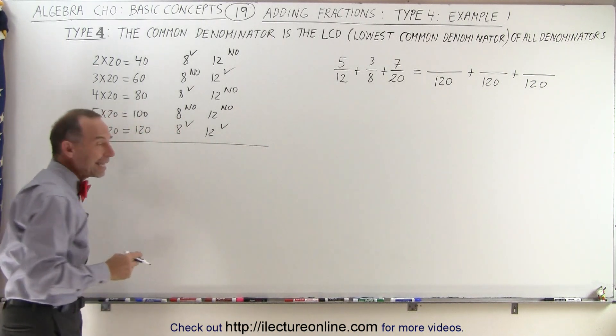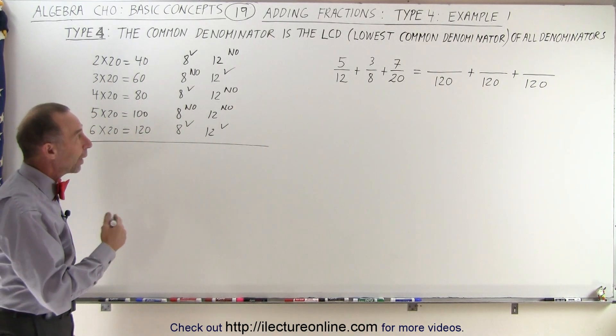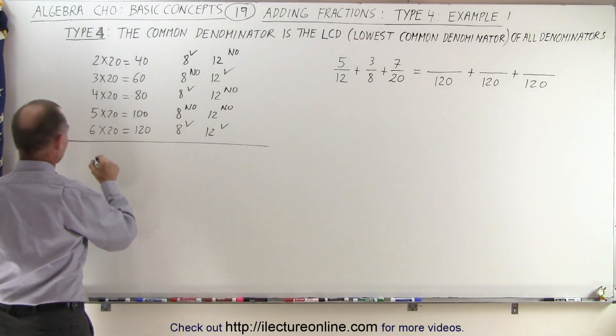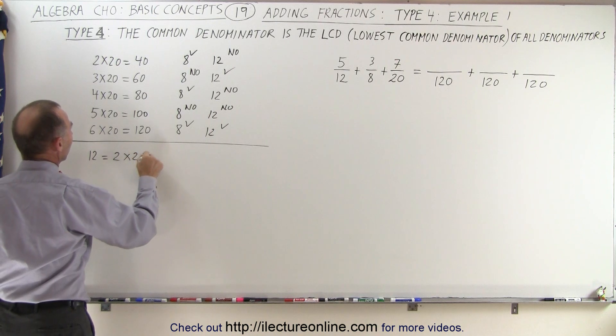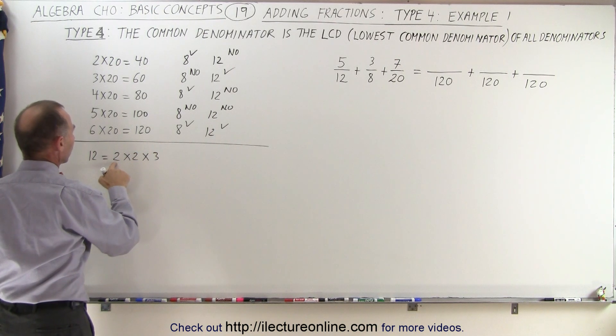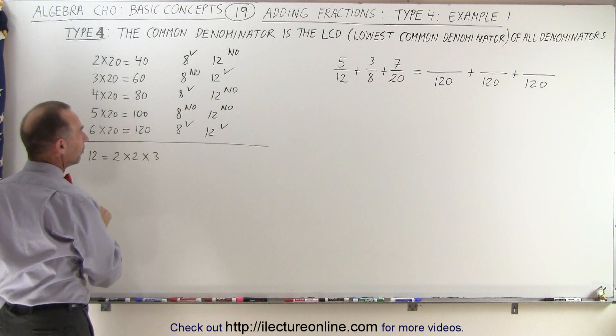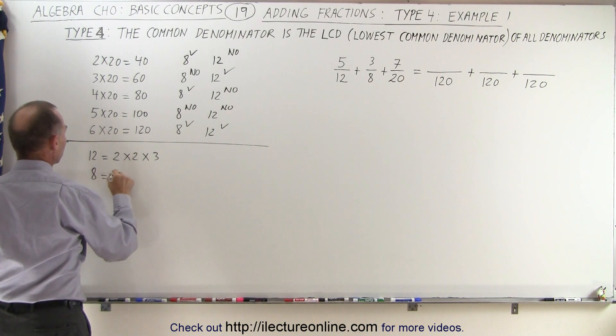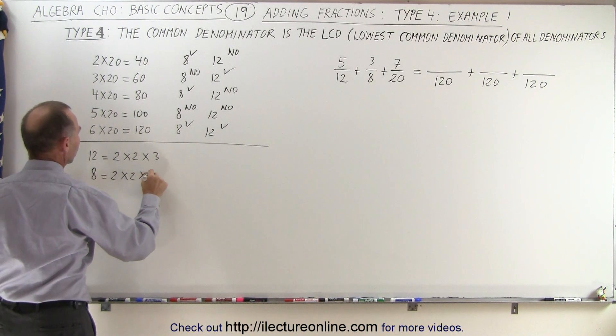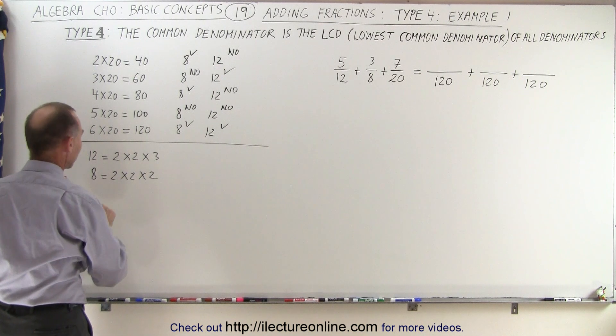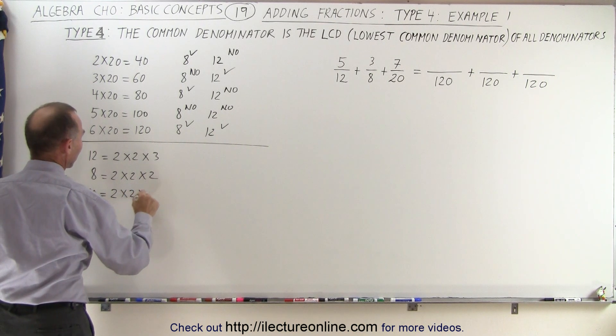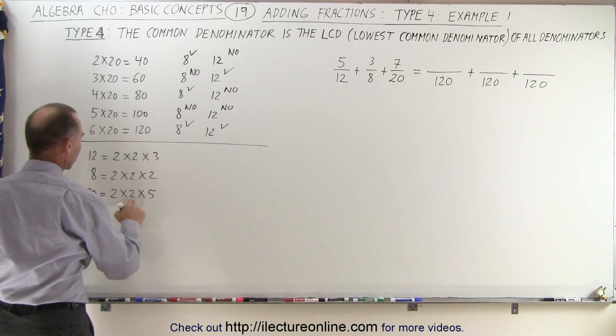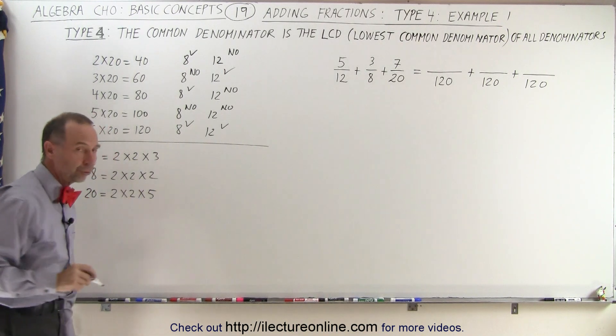Our second method was to take each of the three denominators and write it as a product of its factors. So 12 can be written as 2 times 2 times 3. So we have 2 occurs twice, 3 occurs once. 8 is equal to 2 times 2 times 2. So 2 occurs 3 times. And 20 is equal to 2 times 2 times 5. And so 2 occurs twice and 5 occurs once.